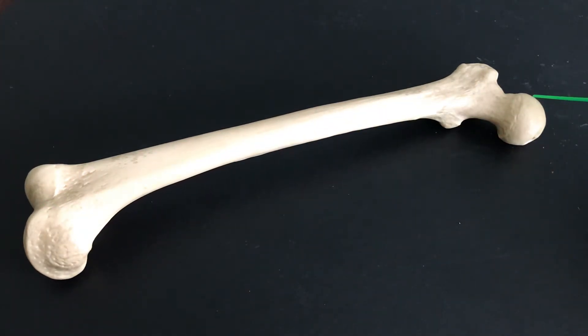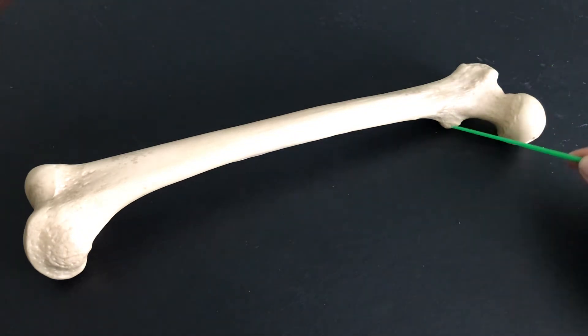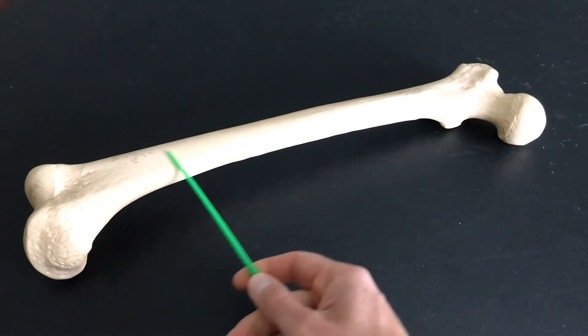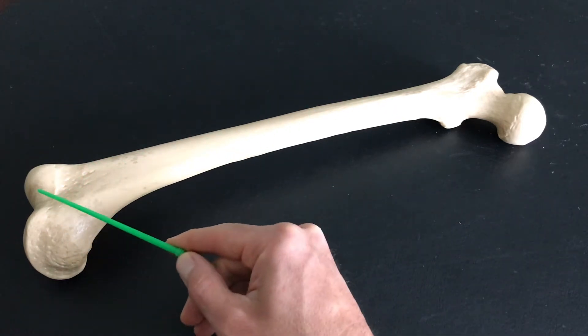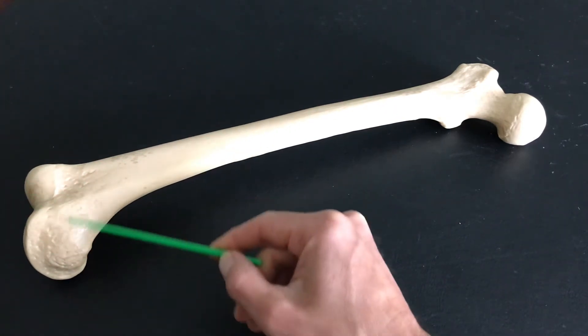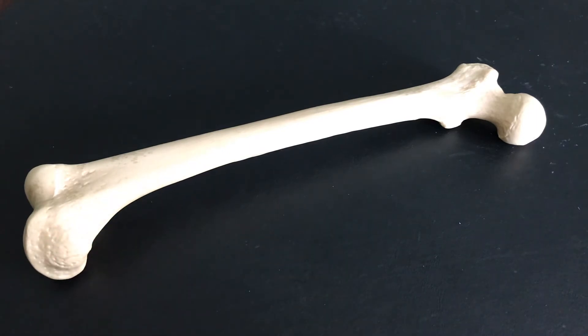When we look at this as a whole, we have the head, the neck, greater trochanter, lesser trochanter, the shaft of the bone is what we call the diaphysis, and then we get down to these condylar structures here. Let's take a little bit of a closer look.